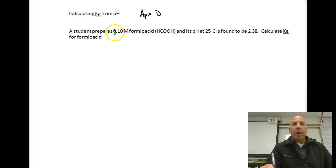What we're looking at is we have a student preparing a 0.1 molar formic acid, and formic acid has the formula of HCOOH at 25 degrees Celsius, and the pH is found to be 2.38, and we're going to be asked to calculate Ka.